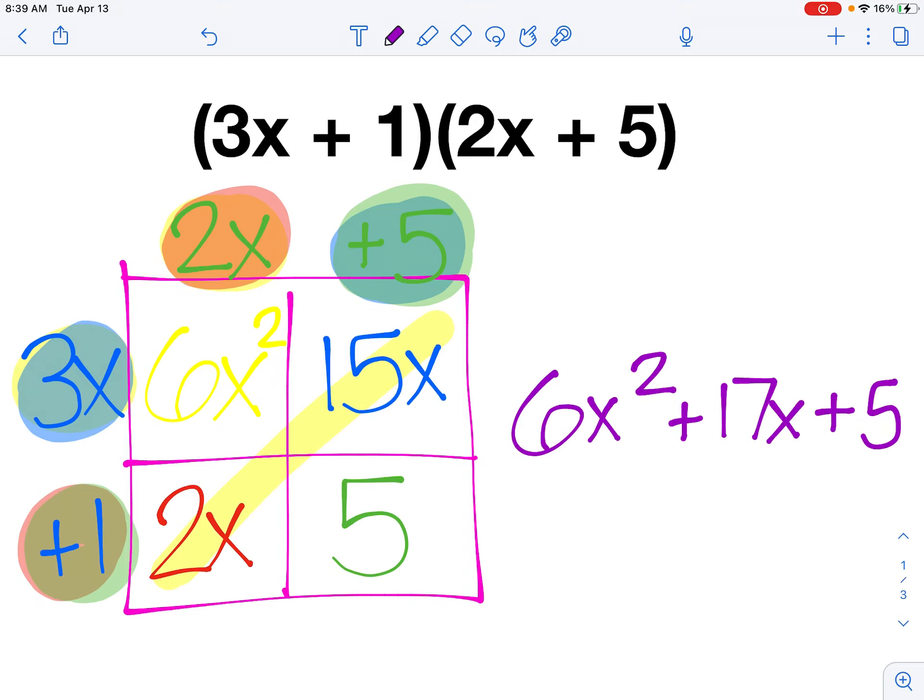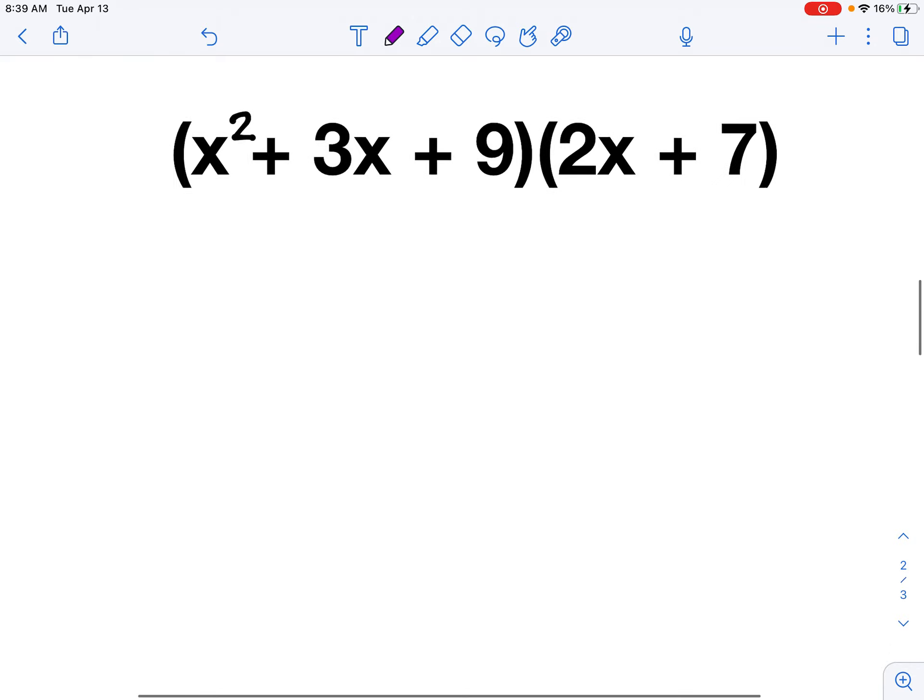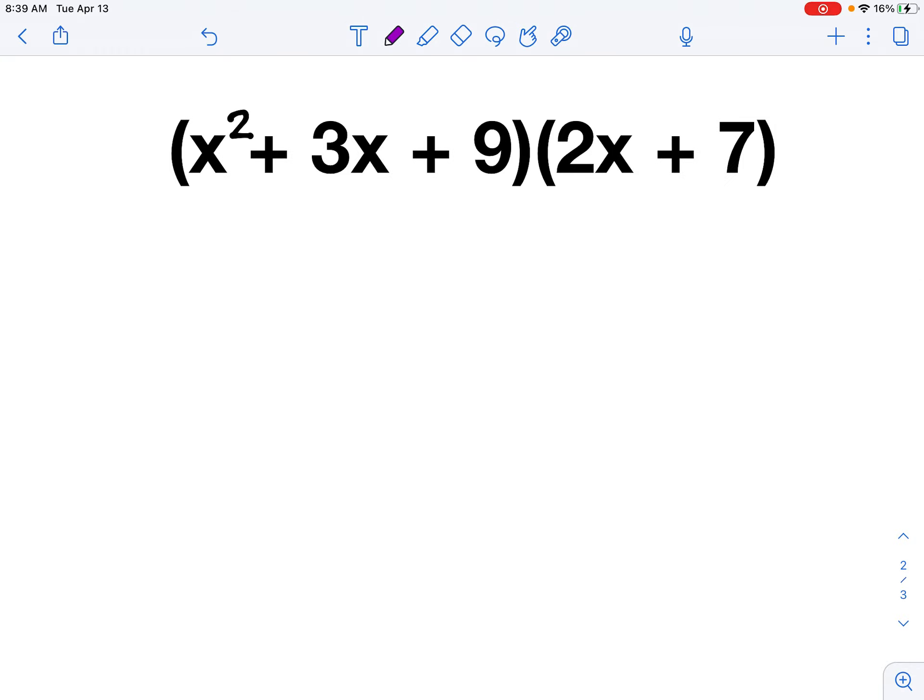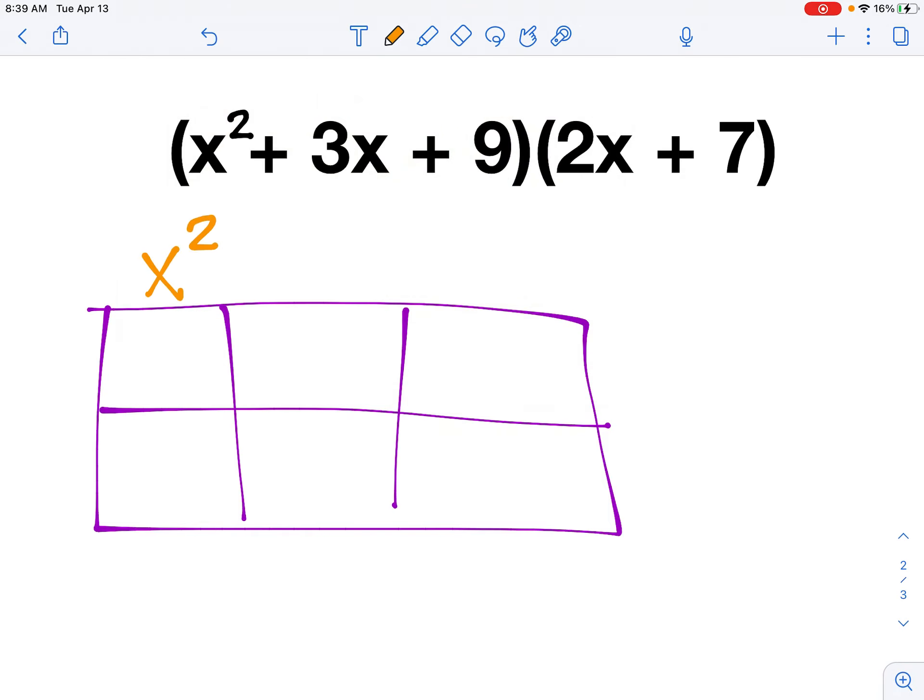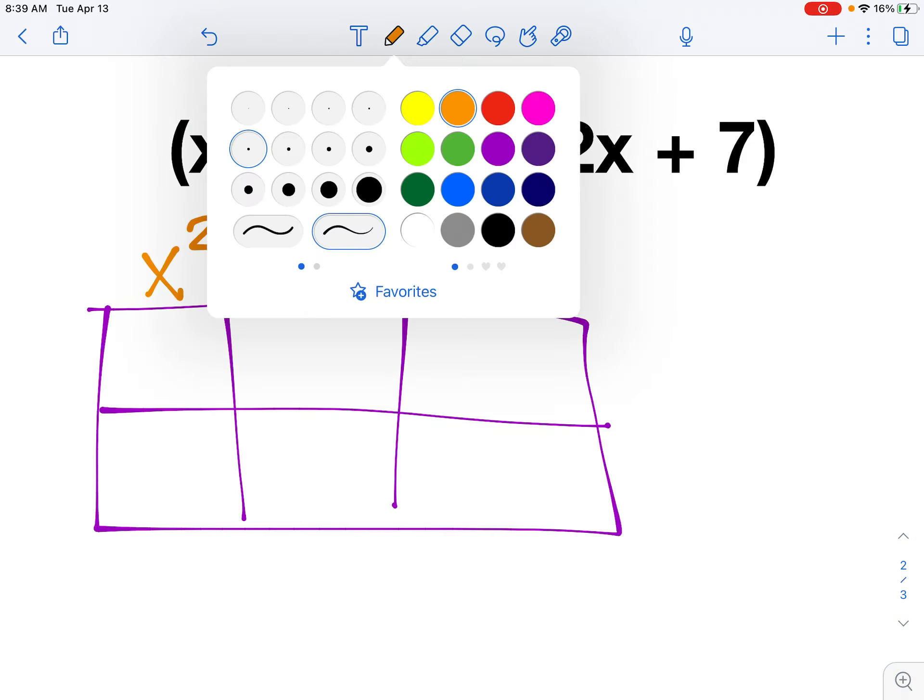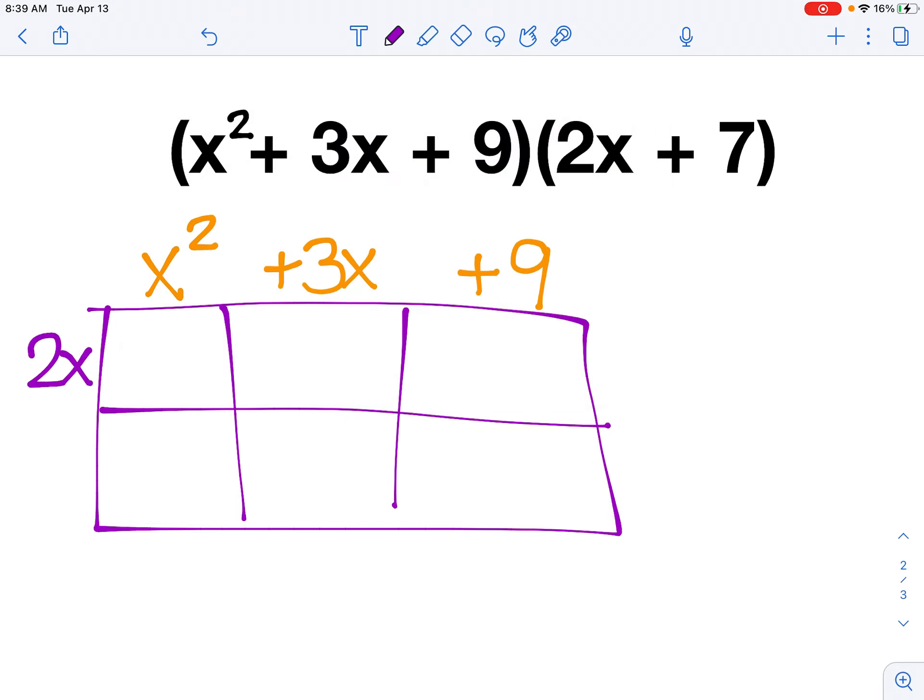Now this process, this box method or window method, will always work no matter how many terms you have. So we want to try one that's just a little more complicated to make sure that you can use this strategy no matter how many terms there are. So in this problem, we're taking a polynomial with 3 terms and multiplying it by a binomial with 2 terms. Instead of setting up that 2x2 square like I did before, this one is going to be more of a rectangle because I have something with 3 terms and something with 2 terms. In this case, I'm going to set up my polynomial on top: x squared plus 3x plus 9. And then down the side of my box, I'm going to have 2x and my plus 7.